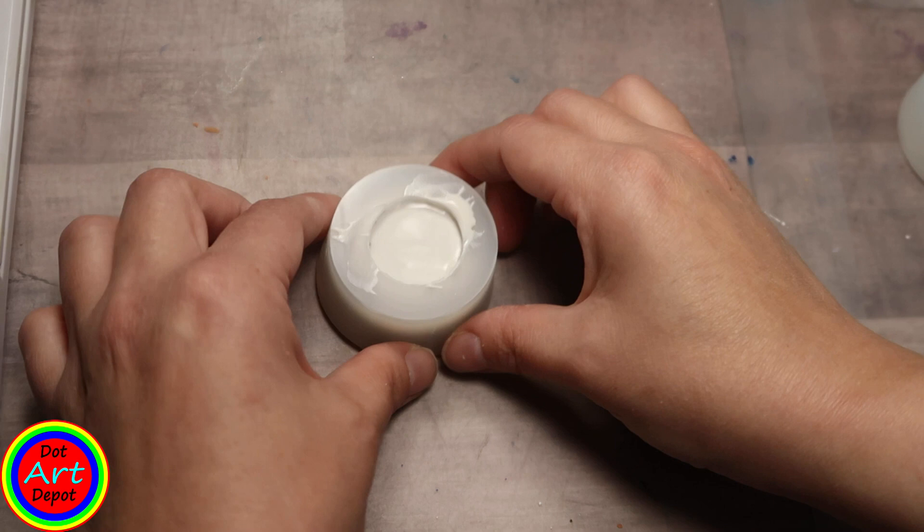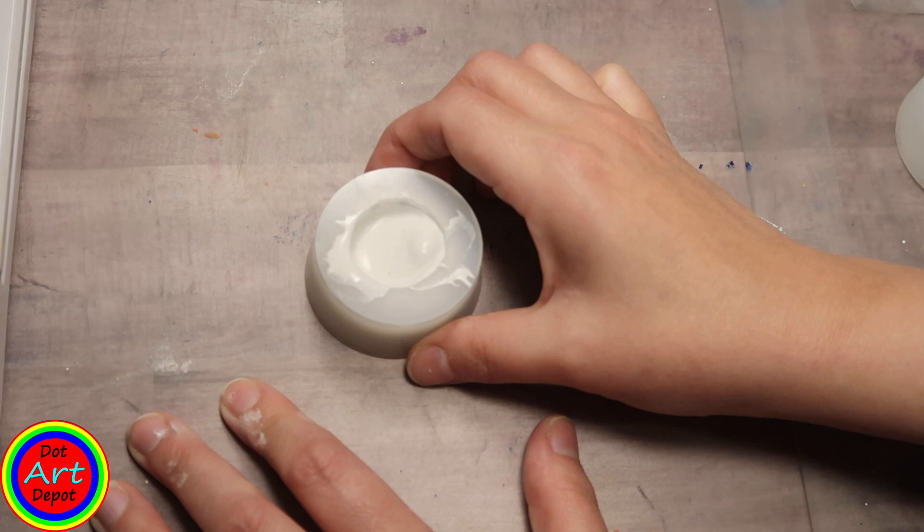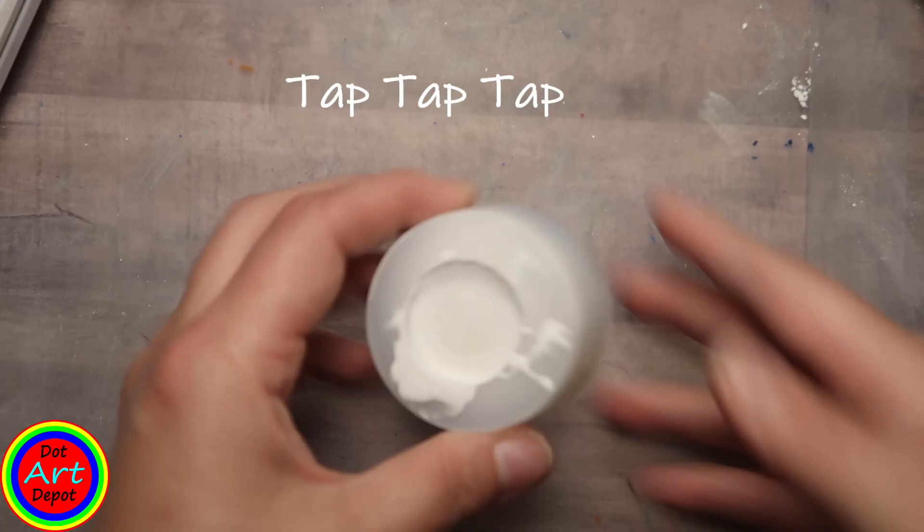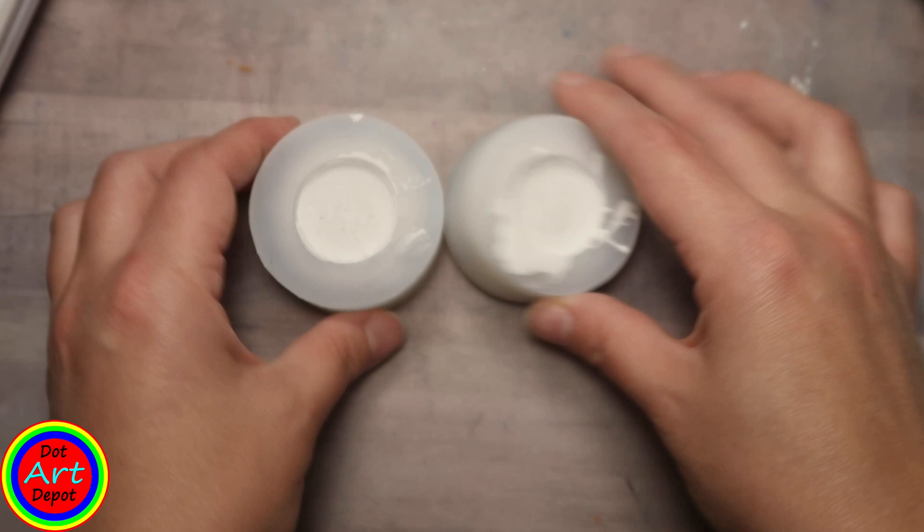Be sure to tap your mold on a hard surface to release any trapped air bubbles that might be in there, because if you don't, you will have little holes in your cast stone.